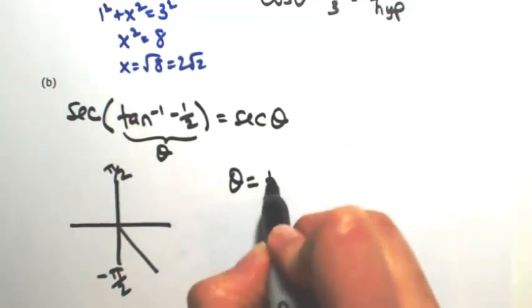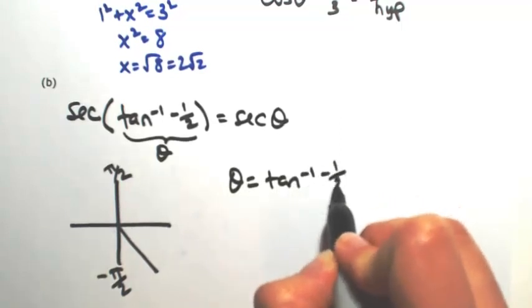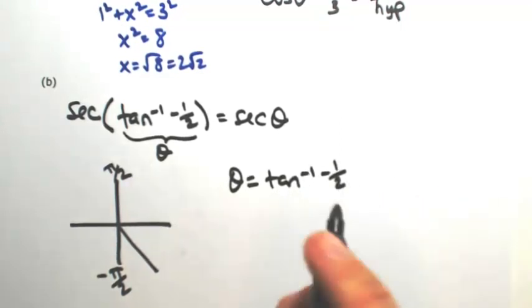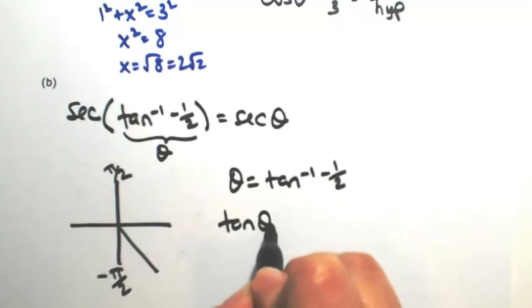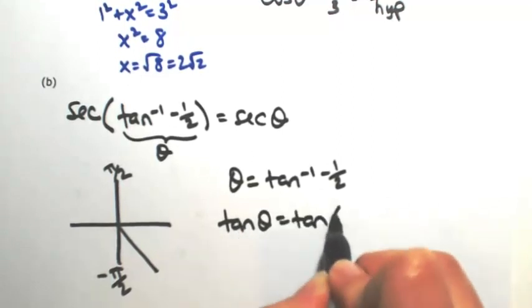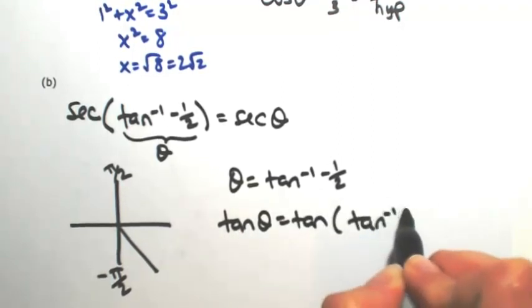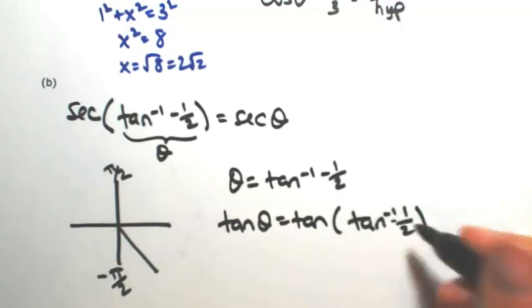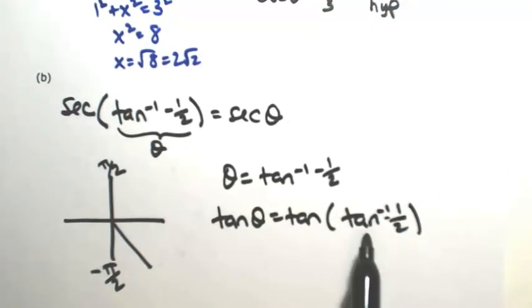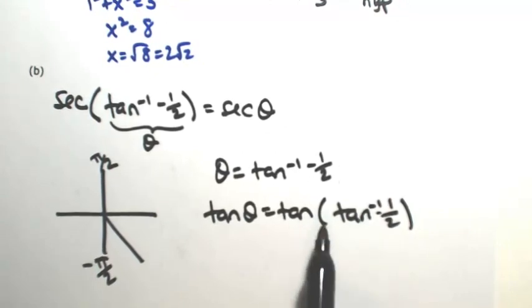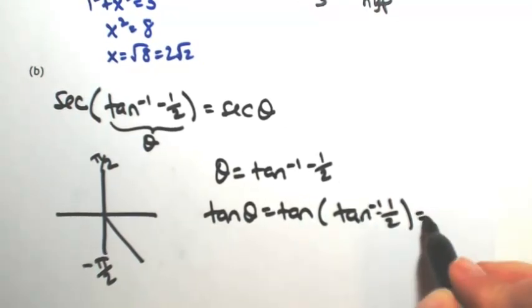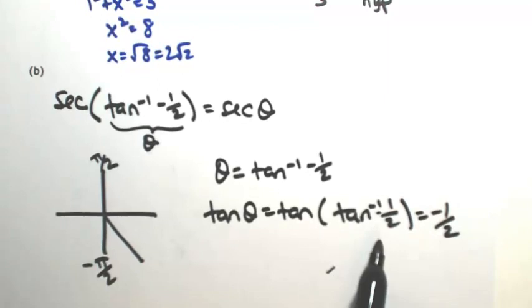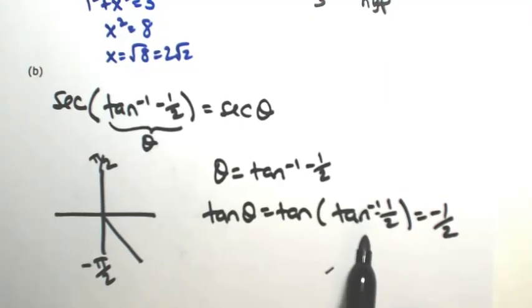Okay, so that means that theta is the inverse tangent of negative 1 half. So if I take the tangent of both sides, we can undo the composition. They undo each other with the composition, giving me back negative 1 half because the domain of inverse tangent is all reals. So that would always be true.